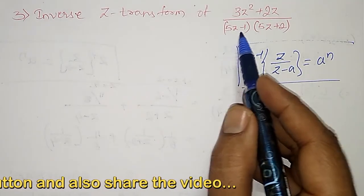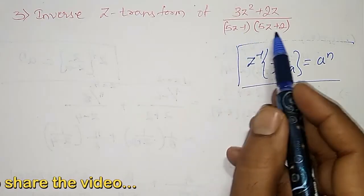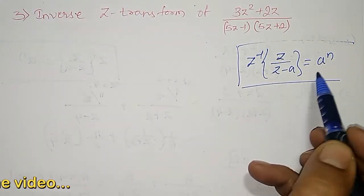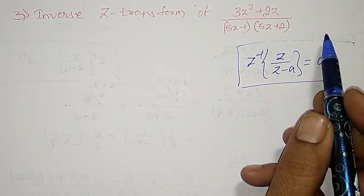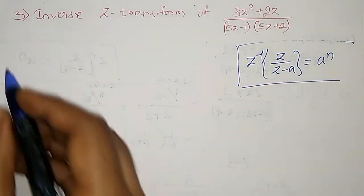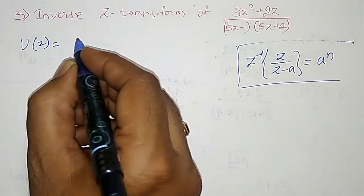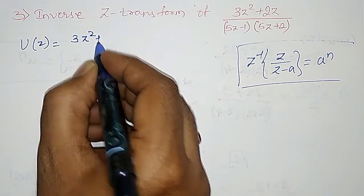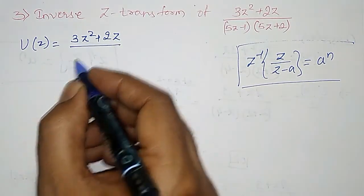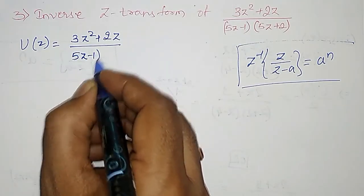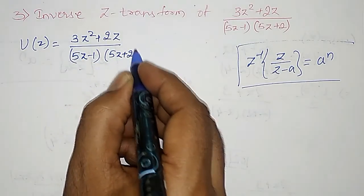I need to take 5 common from each factor in the denominator and convert it into the standard form, then find partial fractions. Let us consider U(Z) equal to (3Z² + 2Z) divided by (5Z minus 1) into (5Z plus 2).